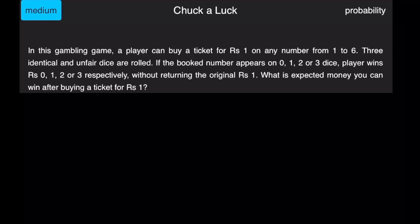So I'll let you guys read the problem first. Basically we're playing this gambling game where there's one rupee, a ticket to play the game, and the game is that we get three turns at rolling a dice. The dice are unfair and identical. We choose a number from one to six before the three rolls. If the booked number appears on 0, 1, 2, or 3 dice, the player wins rupees 0, 1, 2, or 3 respectively.